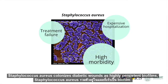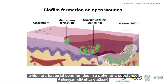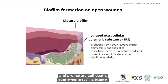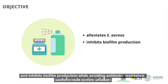Staphylococcus aureus colonizes diabetic wounds as highly persistent biofilms, which are bacterial communities in a polymeric substance that attach to the wound. These biofilms can cause delayed wound healing and premature cell death. Therefore, our goal is to develop a drug that alleviates S. aureus and inhibits biofilm production while avoiding antibiotic resistance.